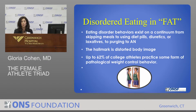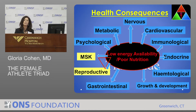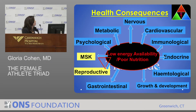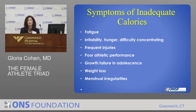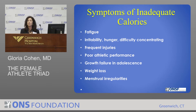Up to 62% of college athletes practice some form of pathological weight control behavior, and it depends on the sport, but you still have to look at all sports, particularly college athletes who are so vulnerable. There are various systems that can be affected. When one doesn't have enough calories, we'll get tired and irritable — and this is depicted on a regular basis in these individuals. They may present with fatigue, irritability, hunger, and difficulty concentrating particularly at school or work.